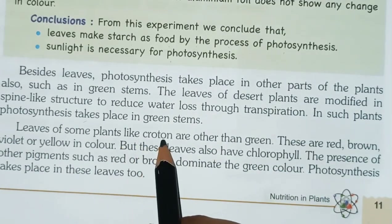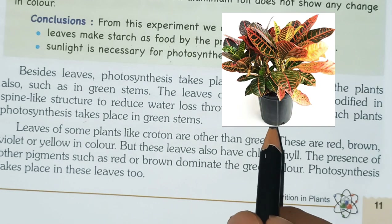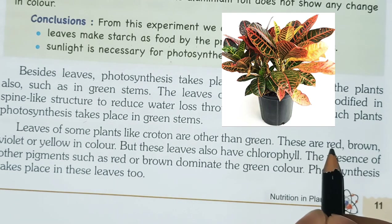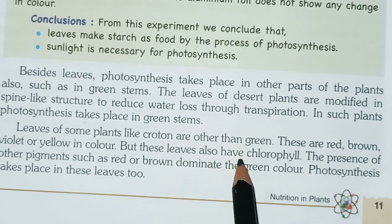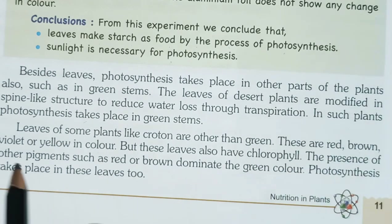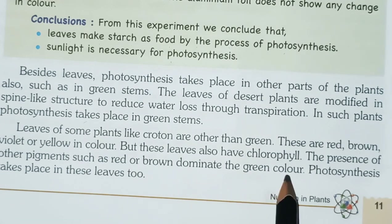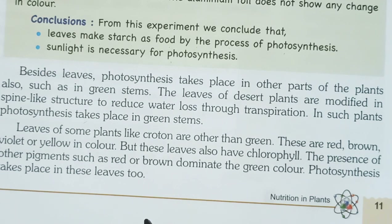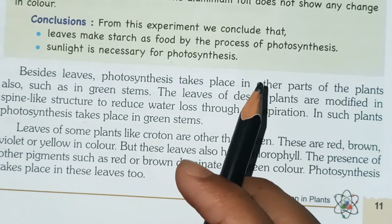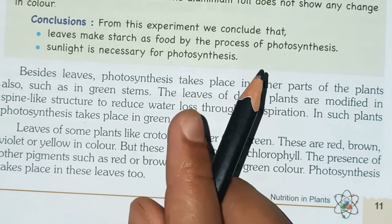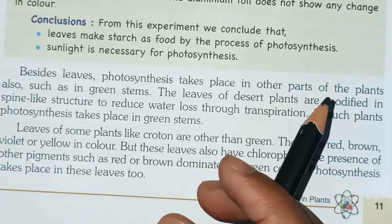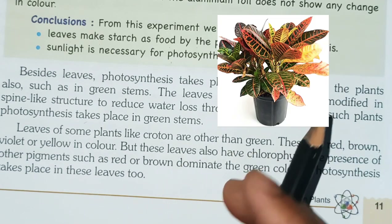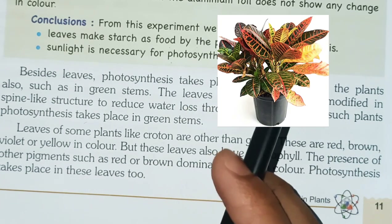Leaves of some plants like croton are other than green — they are red, brown, violet, or yellow in color. But these leaves also have chlorophyll. The presence of other pigments such as red or brown dominates the green color. Photosynthesis takes place in these leaves too, because there are green portions in the croton leaf that contain chlorophyll where photosynthesis can occur.